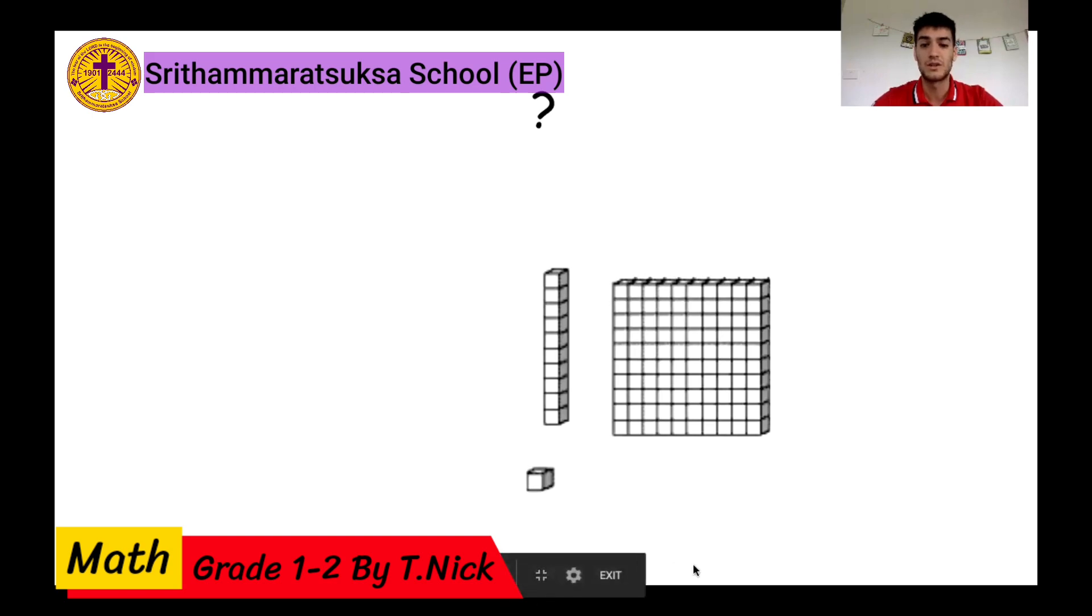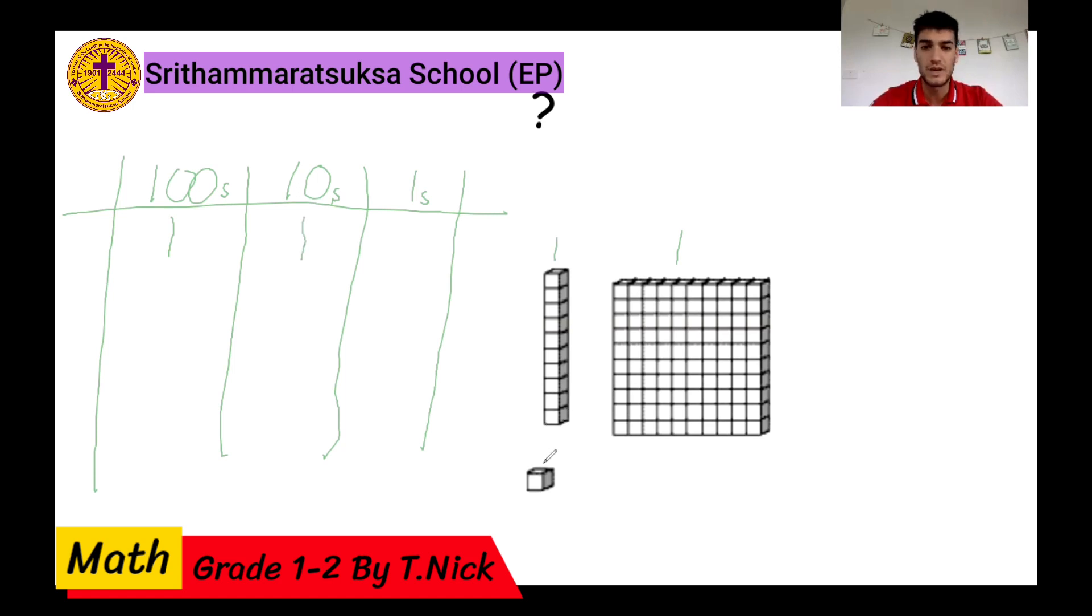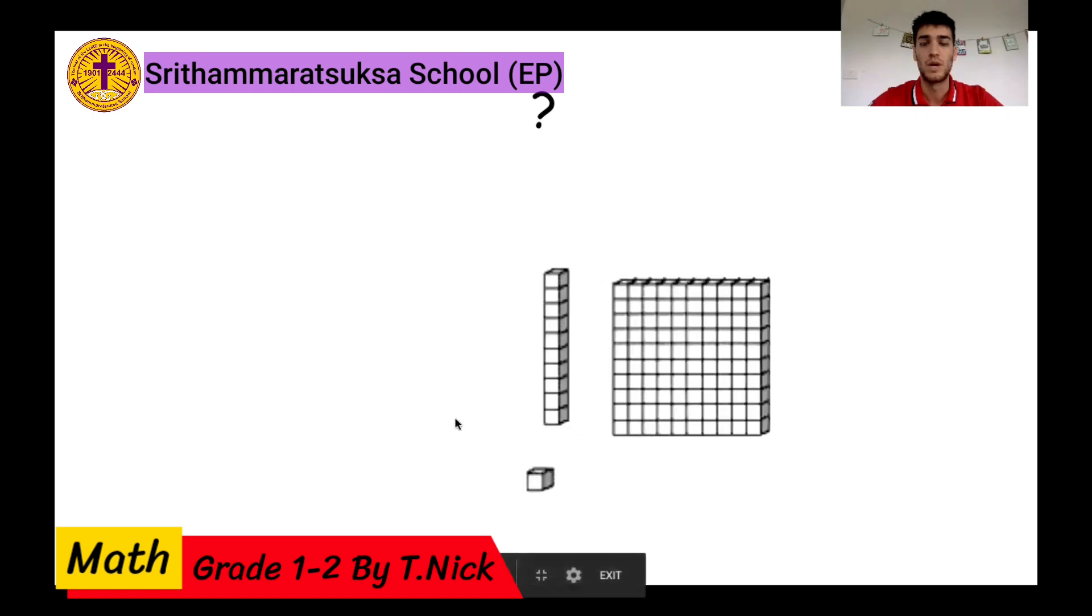Now, here is where we can start to add them together. So if we make a chart. 100, we have 100s, 10s, and ones. How many hundreds do we have? We have one here. So we put 100. How many tens do we have? One. So we have one 10. And how many ones do we have? We have one. 111. So there is our number. How many blocks do we have? We have 111.